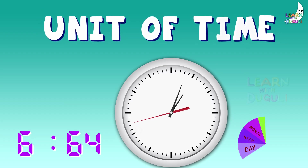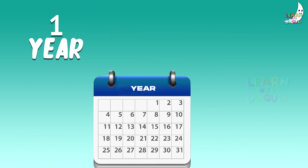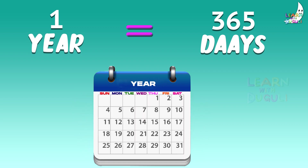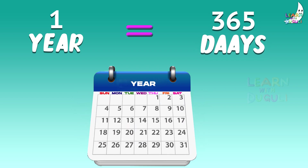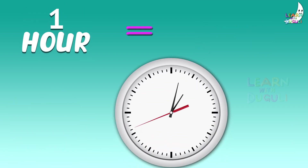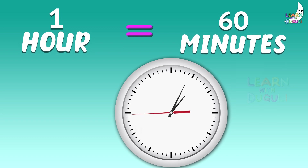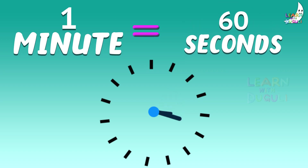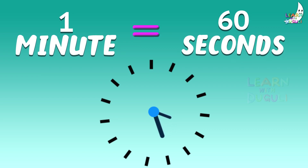Unit of Time: 1 year is equal to 365 days. 1 day is equal to 24 hours. 1 hour is equal to 60 minutes. 1 minute is equal to 60 seconds.